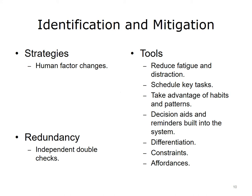An obvious first step to identify and mitigate is the reduction of fatigue and distraction in all individuals involved in care — the limit of continuous hours a provider can work, or the limitation of interruptions during decision-making moments such as during rounds. The scheduling of key tasks is another tool to change the human factor. Meetings at the beginning of every shift or clinic day help plan for specific activities and increase reliability. Also consider taking advantage of habits and patterns. Decision aids and reminders built into the system are another tool. Examples of very effective decision aids are standing orders. Differentiation of information, such as changing the color of overdue items to red, helps change human factors.